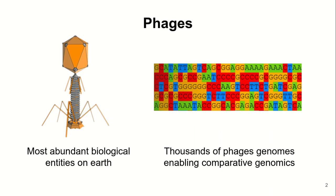Bacteriophages are viruses that kill and selectively infect bacteria. They are the most common biological entities on earth. Phages have shown effective destruction of multiresistant bacteria. Actinobacteriophages are the phages that infect bacteria of the actinobacteria phylum. Some members of this phylum are human pathogens like mycobacterium, while others are useful in agriculture by their contribution to the decomposition of organic matter.